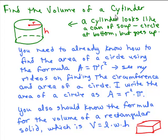Now, to talk about the volume of a cylinder, we talk about how much stuff that holds, basically. That's what volume refers to. And you already need to know how to find the area of a circle using the formula A = πr². If you're not sure of that, look at my videos on finding the circumference and area of a circle. And I like to write the area as A = r² × π. That's, of course, the same thing as π × r².